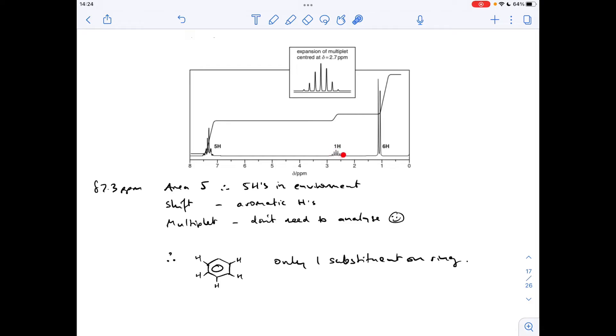So we'll move on to this signal now, and we've got this expansion here to help us see things more clearly. So this one's at 2.7 ppm, it's a heptet, because we've got 1, 2, 3, 4, 5, 6, 7 signals in the multiplet. So what does that mean? There must be 6 hydrogens adjacent to the hydrogen causing this signal, so that's going to mean 2 equivalent CH3 groups.